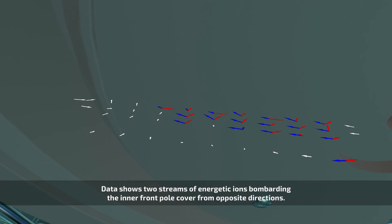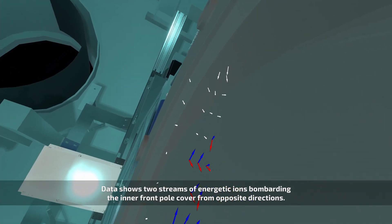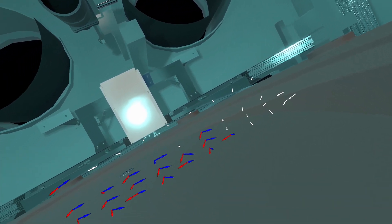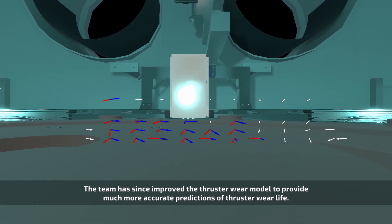Data shows two streams of energetic ions bombarding the inner front pole cover from opposite directions. The team has since improved the thruster wear model to provide much more accurate predictions of thruster wear life.